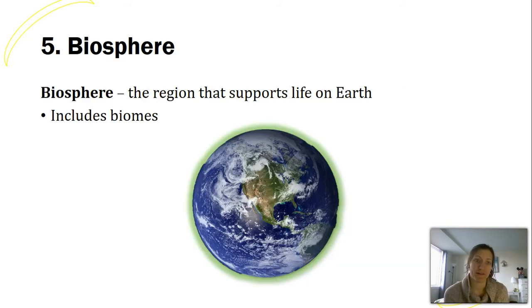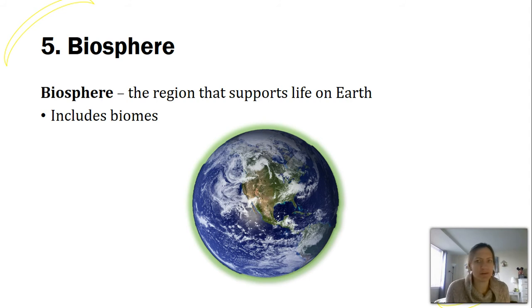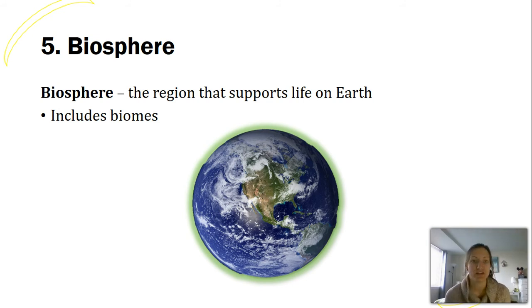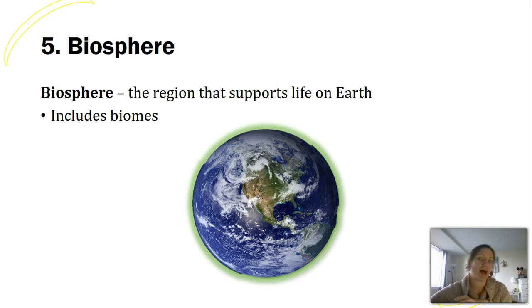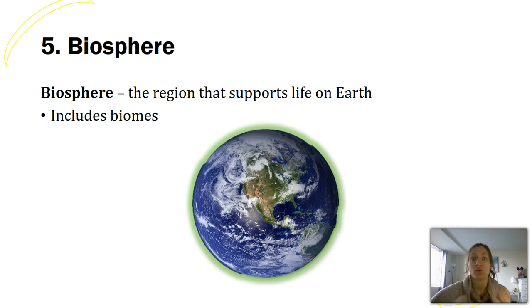Finally, we have the biosphere — you can break down the word: 'bio' means life, 'sphere' is the globe. We're referring to Earth as a whole. Some processes affect Earth globally, like climate change or ocean acidification. If you're studying climate change, you're not looking at one organism or one process — you're looking at all the interactions on Earth. The biosphere level involves really large issues affecting many organisms around the world.